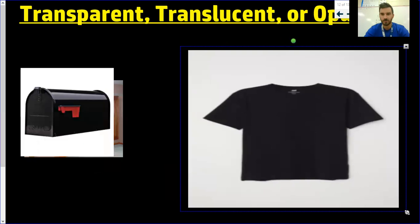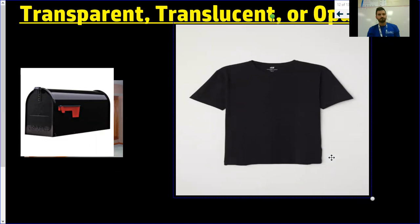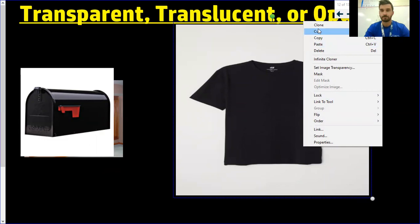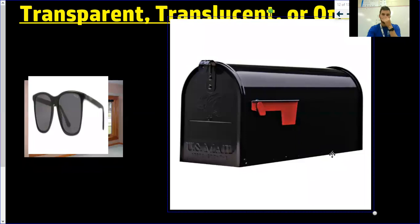T-shirt is going to be opaque, and this T-shirt specifically would absorb a lot of light which gets converted to heat energy because it's a little bit darker. It absorbs more and reflects less, so that would be opaque. And a mailbox — this would be opaque. You cannot see through it; that light is being reflected and absorbed.